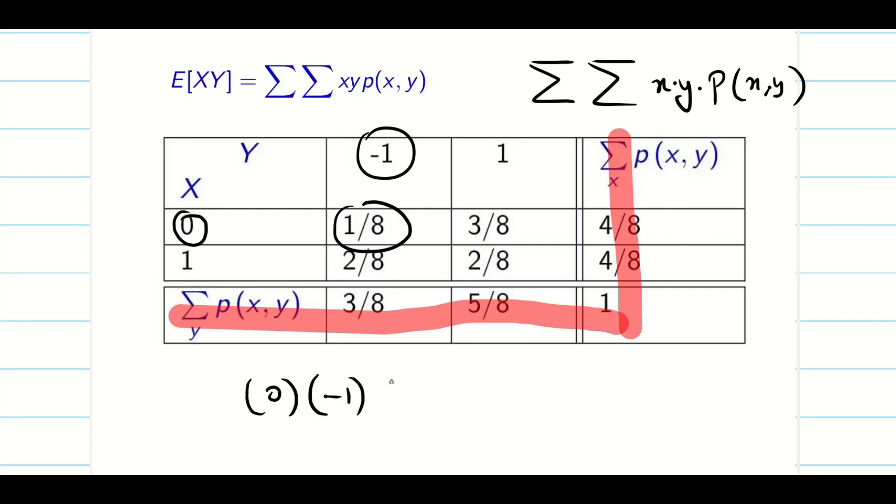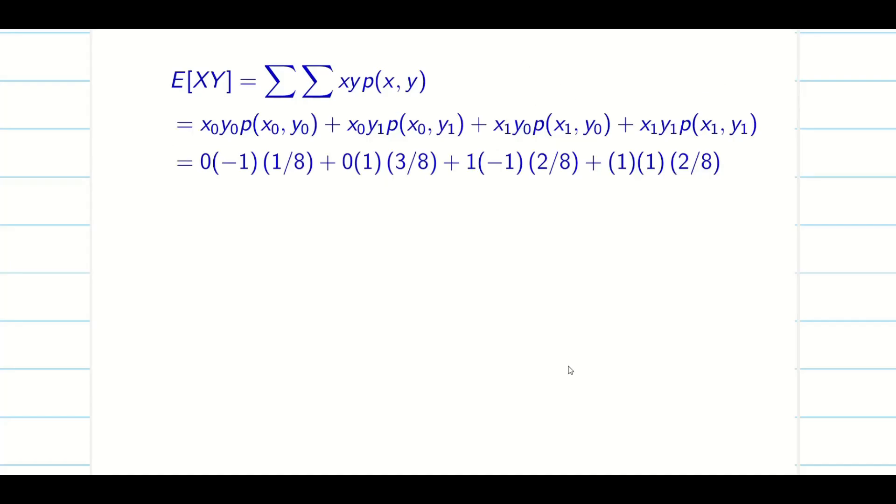Now, X into Y into the corresponding probability. 0 into minus 1 into 1 by 8. Similarly, 0 into 1 into 3 by 8. Whatever the variables given to us, multiply the X variable and Y and finally the probability. Once you calculate, find the value. This is the fifth data we need. All the data are done.